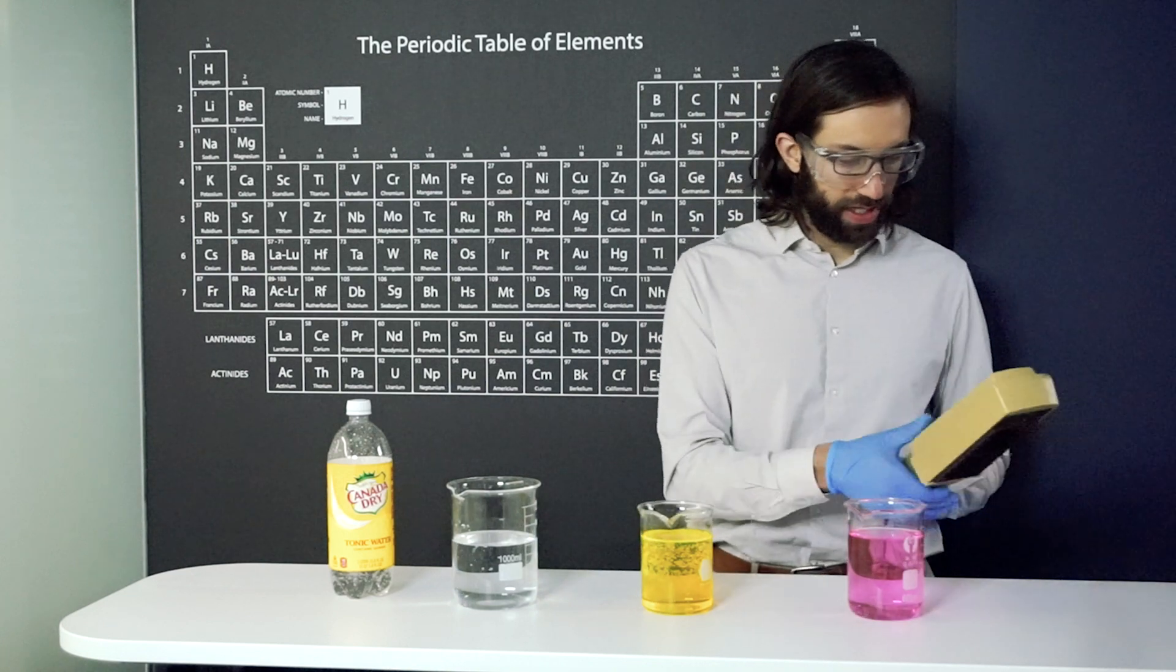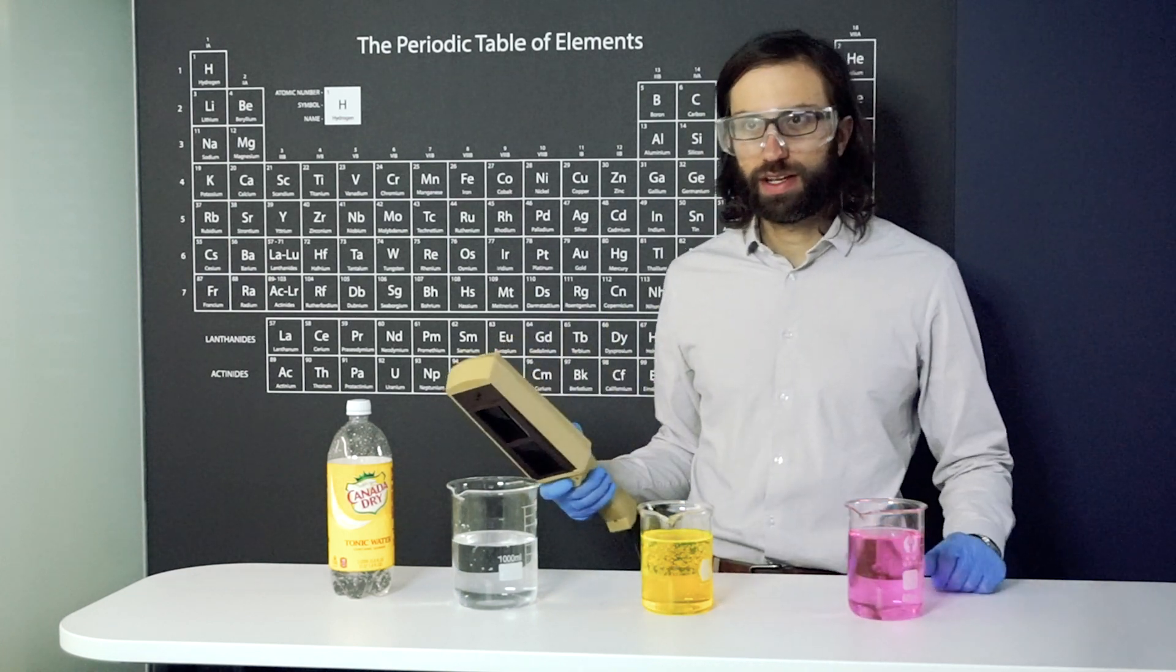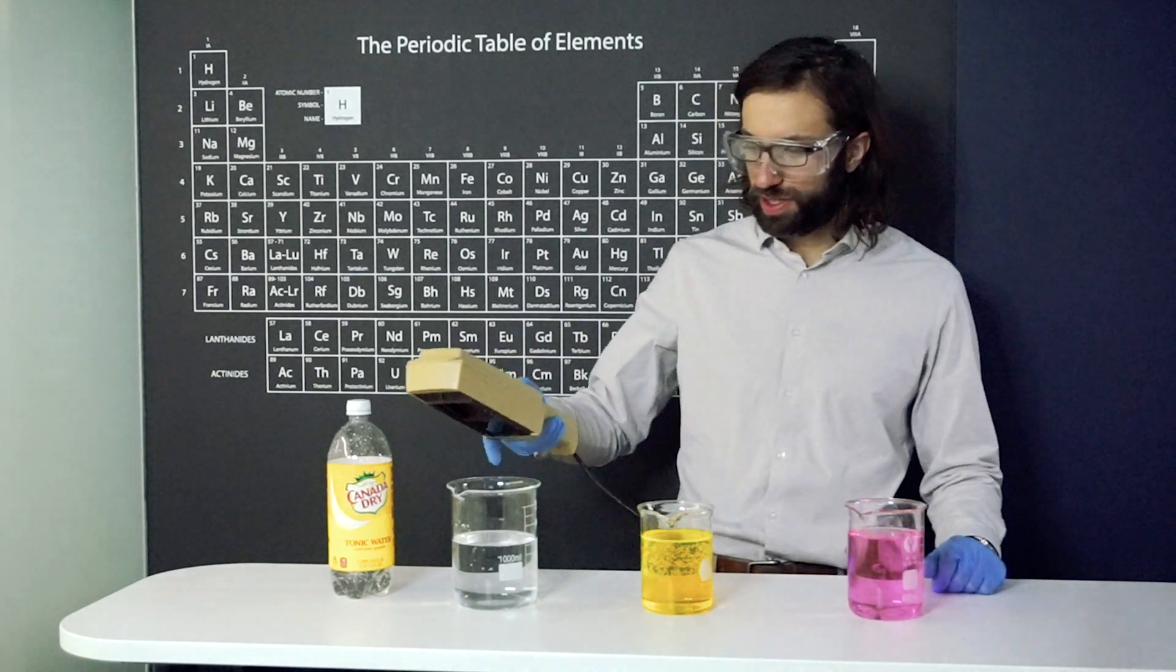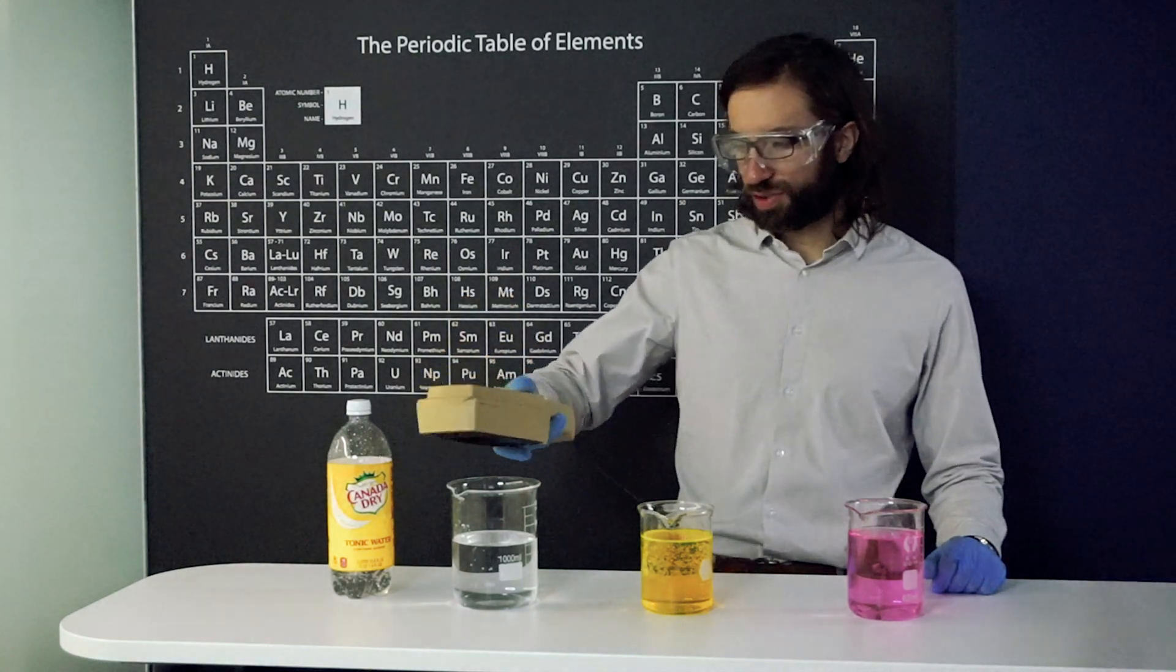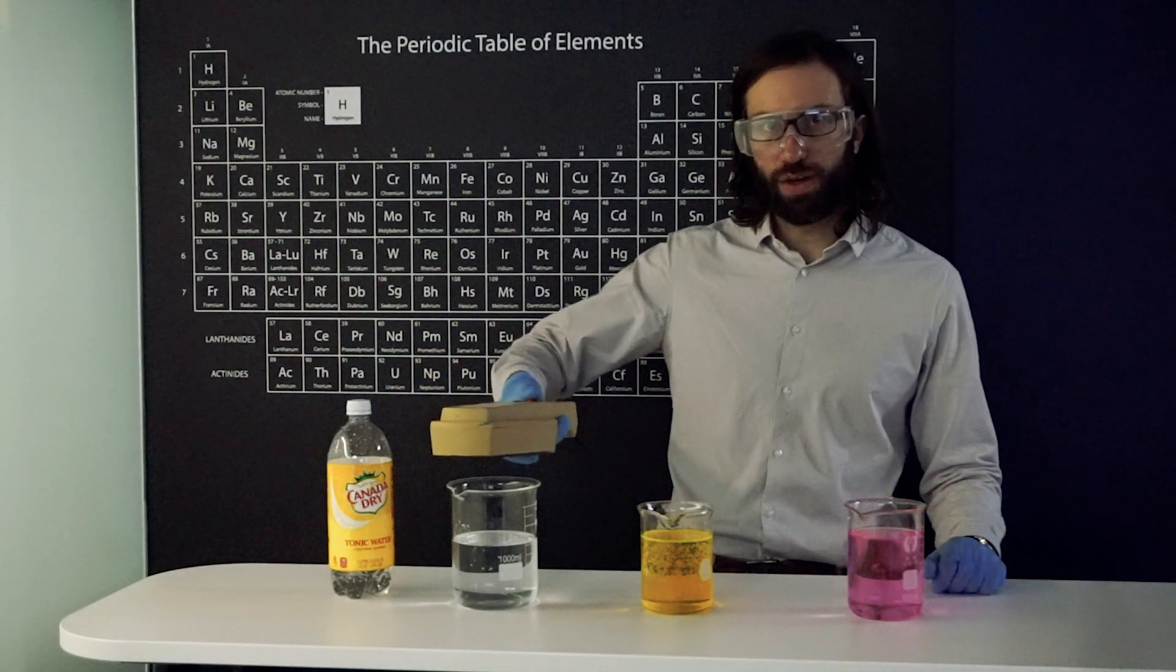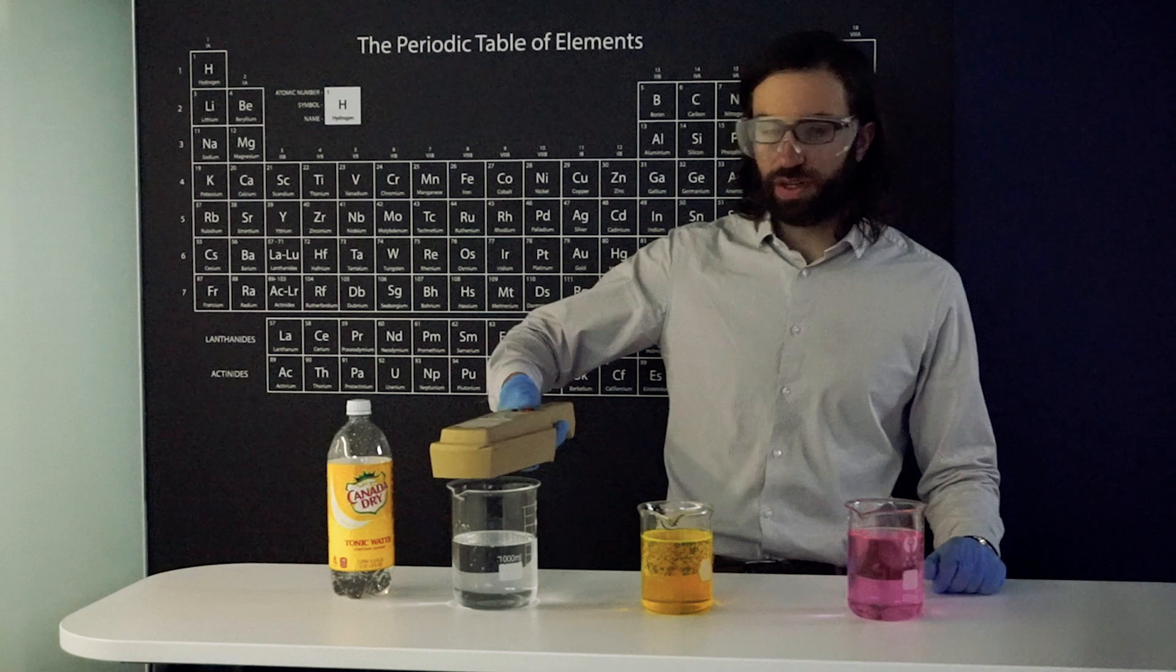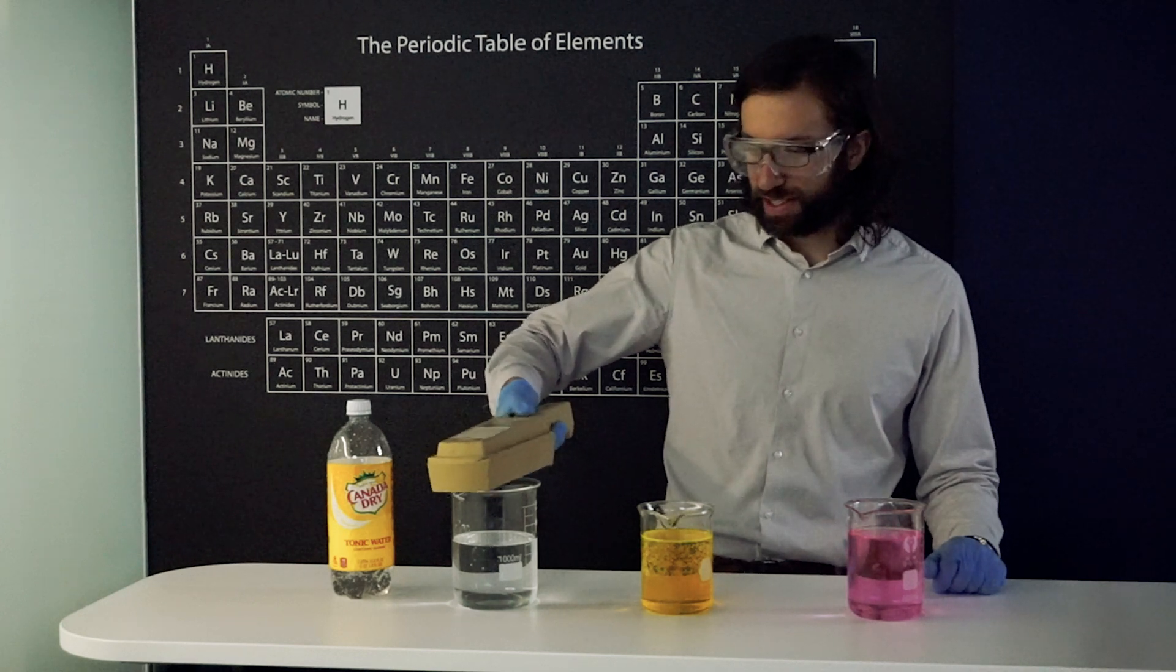And what we're going to do is cause these to fluoresce. And so we're going to use ultraviolet light. This is 366 nanometers ultraviolet light, also known as black light, because you can't see it.